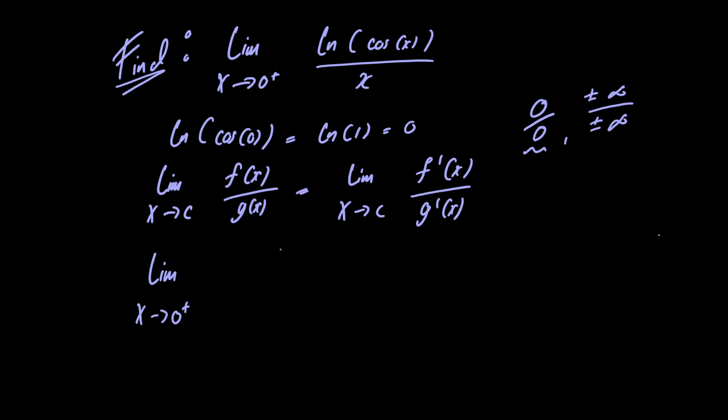In order to take the derivative of the natural logarithm of cosine of x we're going to have to use the chain rule, so we'll take the derivative of the outside part and then multiply it by the derivative of the inside part.